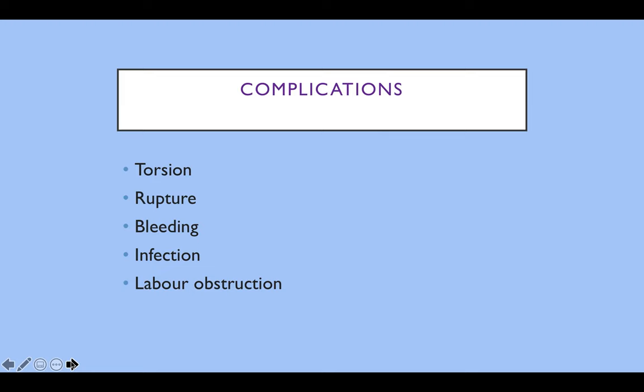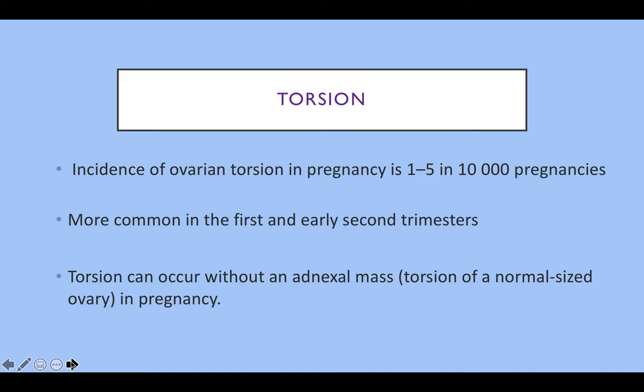The main complications of adnexal masses are torsion, rupture, and bleeding. They can become infected — though this is rare — and depending on their size can cause labour obstruction. It is important to alert obstetricians when you see these masses so patients can be seen in antenatal clinic and counselled appropriately. The incidence of ovarian torsion in pregnancy is between 1 and 5 in 10,000 pregnancies, more common in the first and early second trimester, probably because the uterus is not yet large enough to restrict movement. Interestingly, torsion can occur in pregnancy without an adnexal mass — torsion of a normal-sized ovary is possible.